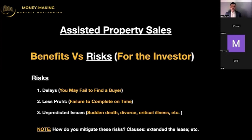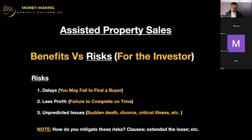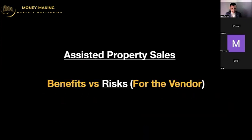In terms of risks, we have delays. If you don't find a buyer in the time you negotiated with the vendor, you're going to experience some delays, which means less profit because you'll fail to complete on time. You may also experience unpredictable issues such as sudden death, divorce, critical illness, and so on — all these factors may delay the project. One way to mitigate these risks is to use clauses in which you can extend the lease.